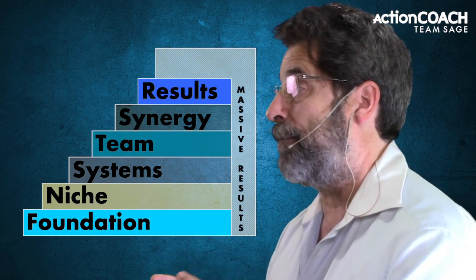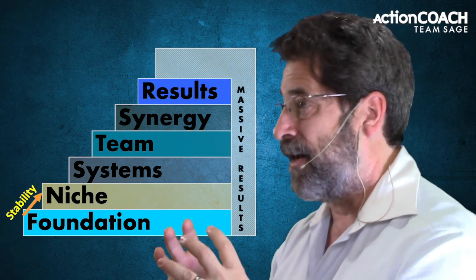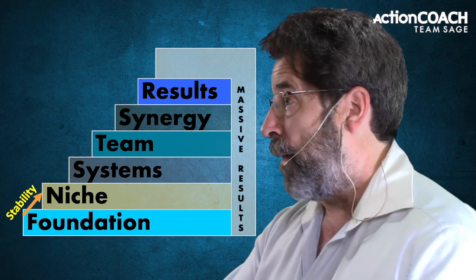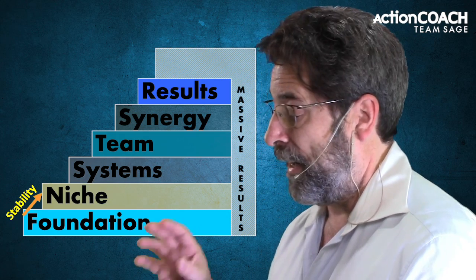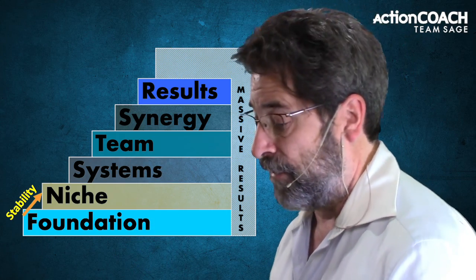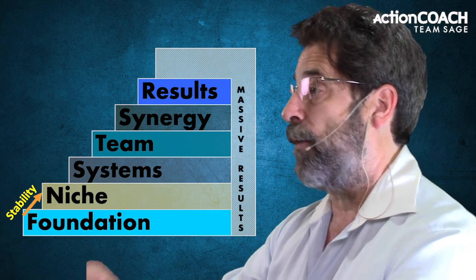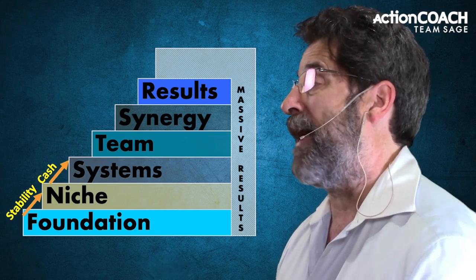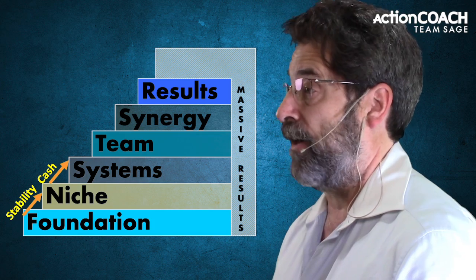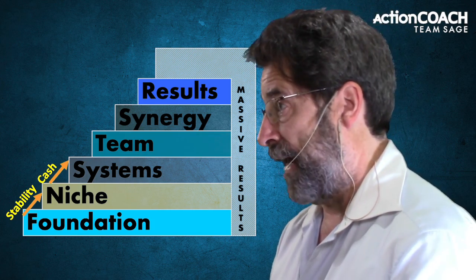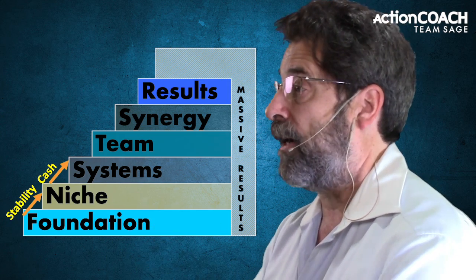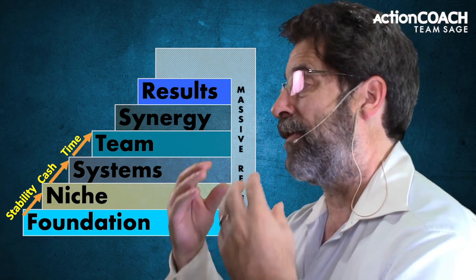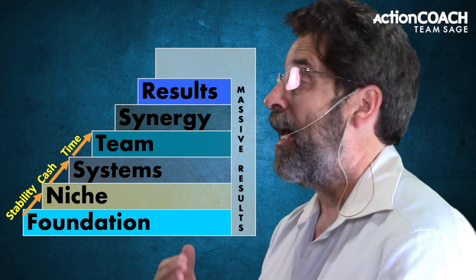Once we have the foundation in place — getting rid of the chaos, putting in control, creating a stable business — then we move up to the niche level. Remember, number of leads we cover last because marketing is expensive, so we focus on it more at the niche level — that's step two. Step three is when we bring in systems and make sure we have plenty of leverage in the business. The first step brought in the foundation, the second step brings in marketing and cash, and the third step brings in leverage for efficiency and time.